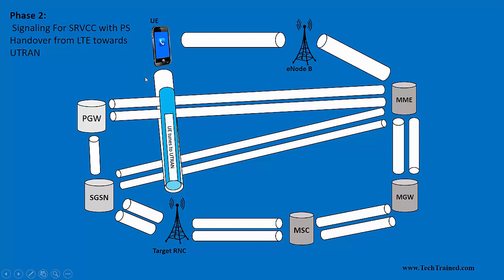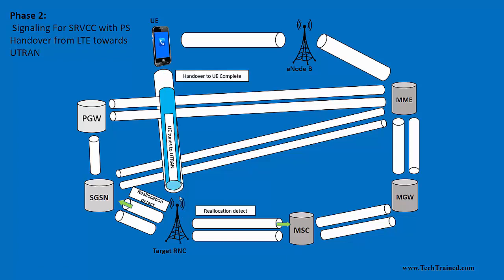In phase two, the UE tunes towards the UMTS or UTRAN. Once it gets tuned, the target RNC informs the MSC that relocation has been detected, and also informs the SGSN for the packet switch portion. Handover complete then takes place, as indicated by the green arrow going towards the target RNC, confirming that handover of the UE to the target RNC has been completed.